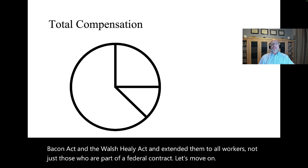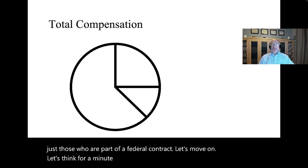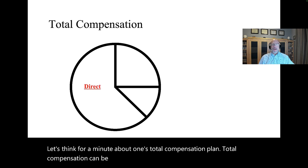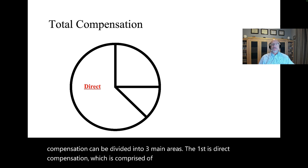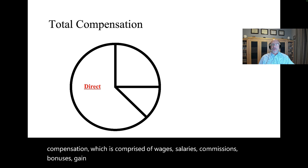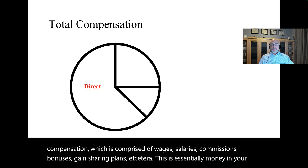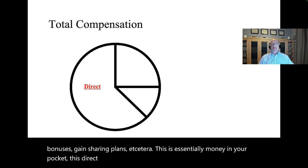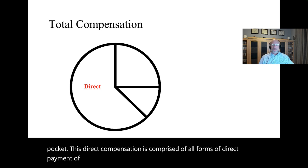Let's think about one's total compensation plan. Total compensation can be divided into three main areas. The first is direct compensation, which is comprised of wages, salaries, commissions, bonuses, gain-sharing plans, etc. This is essentially money in your pocket — all forms of direct payment of money to you.